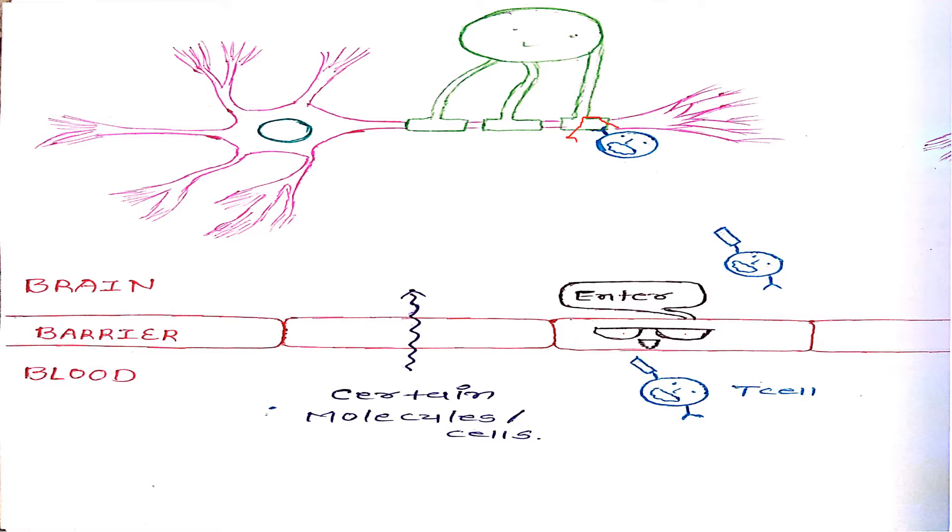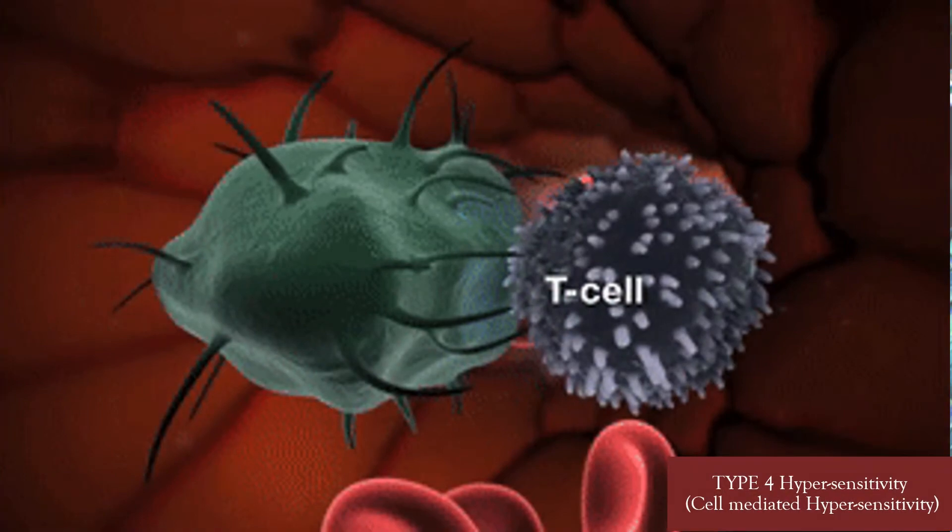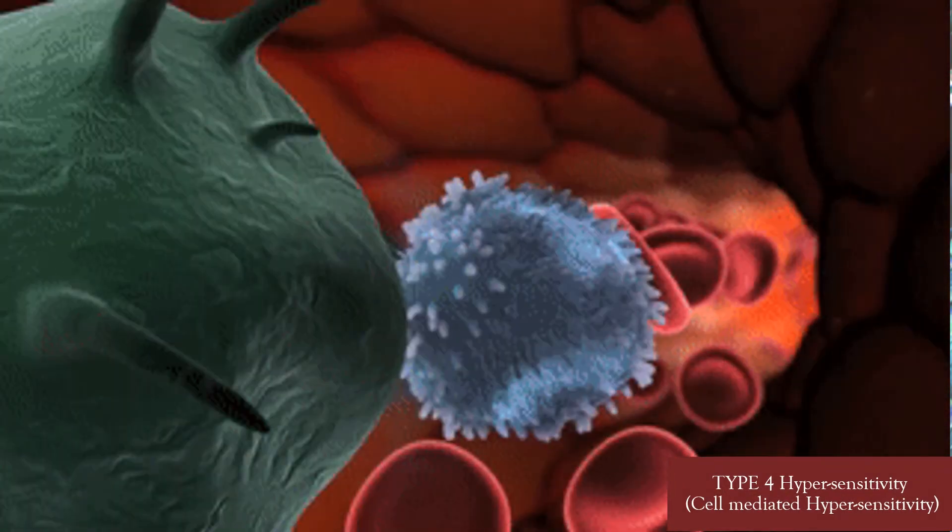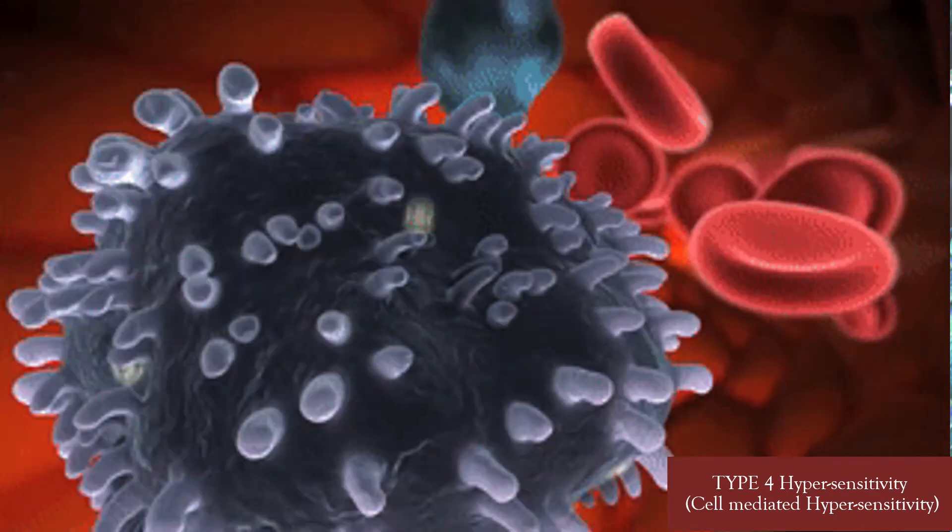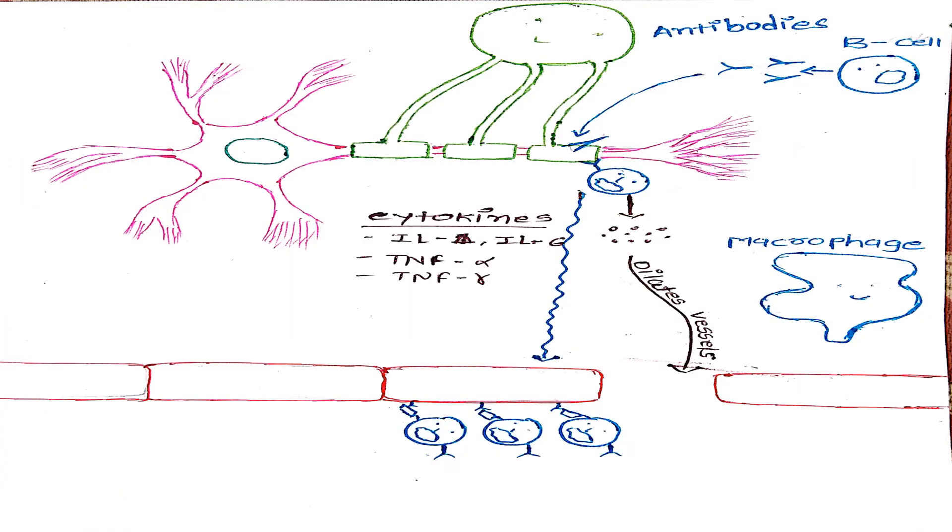Once the T cell makes its way and gets activated by myelin sheath, it changes the blood-brain barrier cells to express more receptors. This allows immune cells to more easily bind. Multiple sclerosis is a type 4 hypersensitivity or cell-mediated hypersensitivity. It means those myelin-specific T cells release cytokines like interleukin-1, interleukin-6, tumor necrosis factor alpha, tumor necrosis factor gamma. This all together dilates the vessels and allows more immune cells to get in. This directly causes damage to the oligodendrocytes.